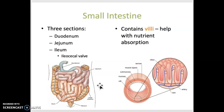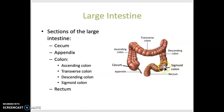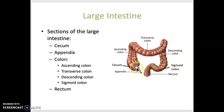The ileocecal valve connects the small intestine to the large intestine, which is the last portion of the GI tract. It's about five feet long and it frames the small intestine. The cecum is the first several inches. The appendix is a finger-like projection that hangs off of the cecum, and then the colon is the rest of the large intestine. The rectum is the final about eight inches or so of the large intestine.